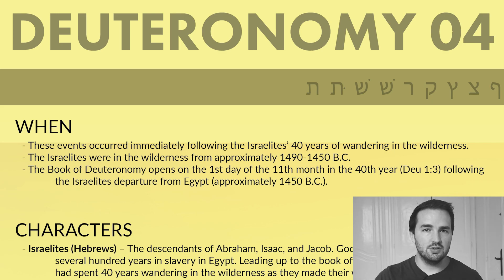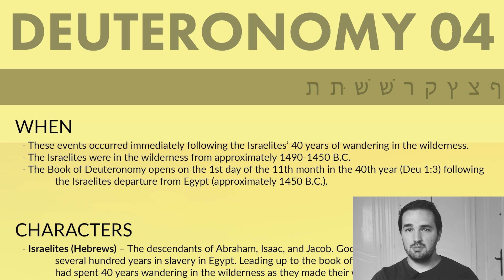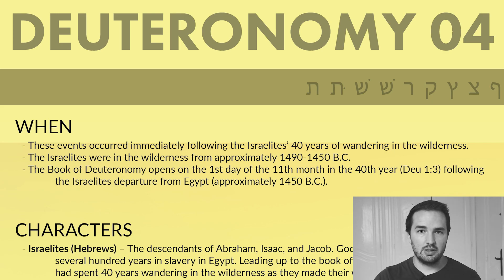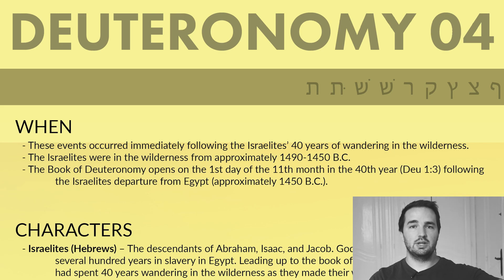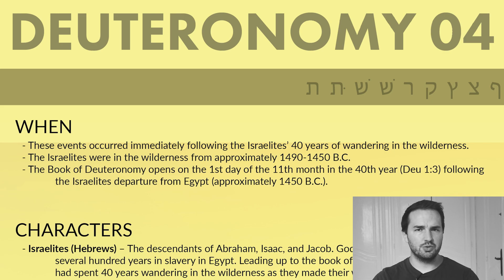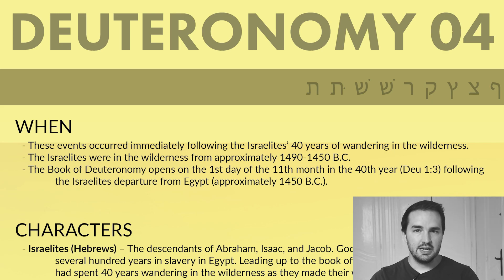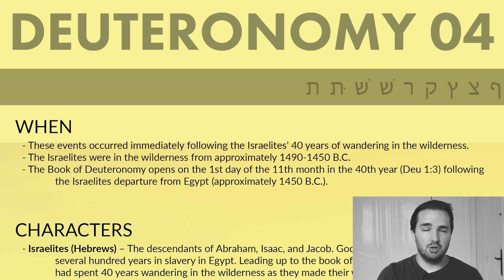Deuteronomy chapter 4 — when did these events happen? Pretty much the same as the first three chapters of Deuteronomy. These events occurred immediately following the Israelites' 40 years of wandering in the wilderness. Deuteronomy is a record of Moses talking to the Israelites before they go over into Canaan, right before Moses's death. The Israelites were in the wilderness from approximately 1490 to 1450 BC, so this is about 1450 BC.